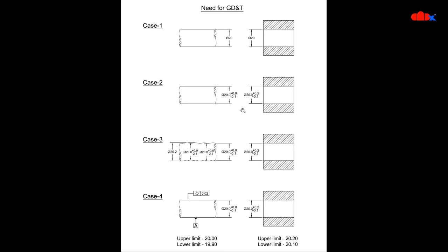If you calculate the limits: the shaft upper limit is 20 and lower limit is 19.9. The hole upper limit is 20.2 and lower limit is 20.1. So the smallest hole is 20.1 and the biggest shaft is 20 — enough clearance in all cases. I sent the revised drawing for manufacturing. When I received the components, I could assemble about 70% of them, but 30% were still failing.